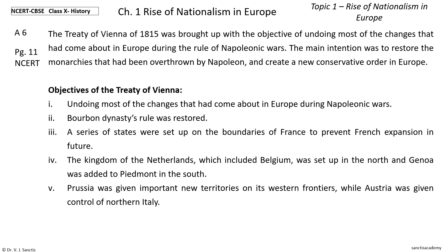Number four: the Kingdom of Netherlands, which included Belgium, was set up in the north, and Genoa was added to Piedmont in the south. Number five: Prussia was given important new territories on its western frontiers, while Austria was given control of Northern Italy.